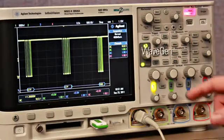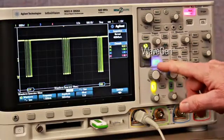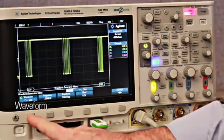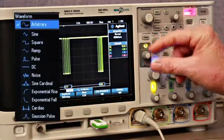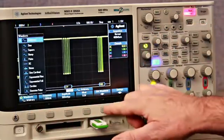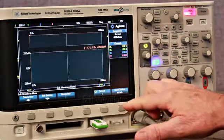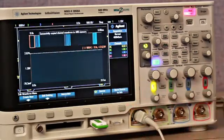First, press the WaveGen front panel key, and then select the arbitrary wave shape. Next, press the Edit Waveform soft key, and then simply press the Store Source to Arb soft key.